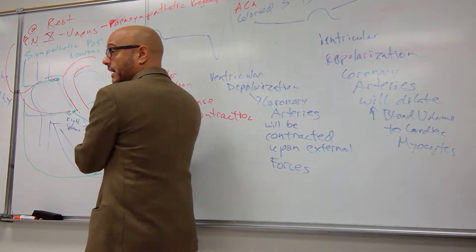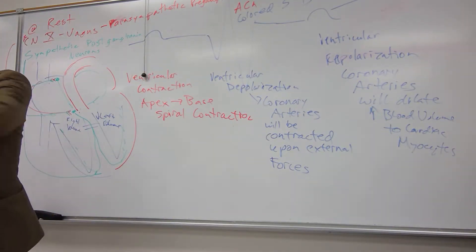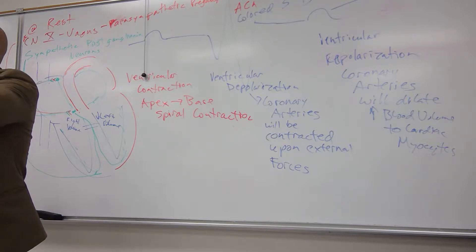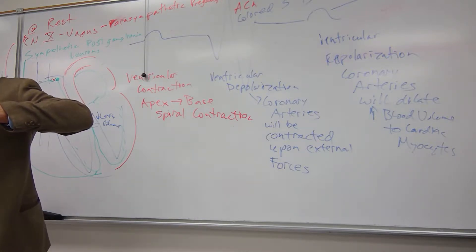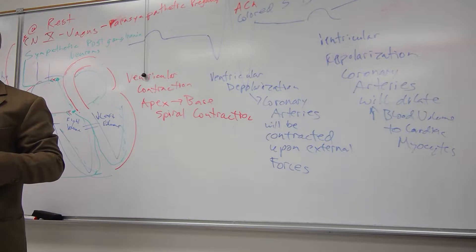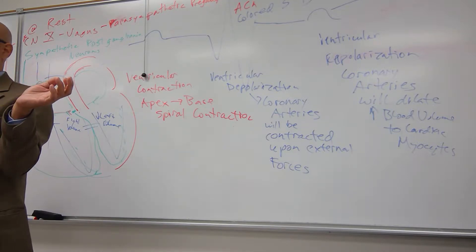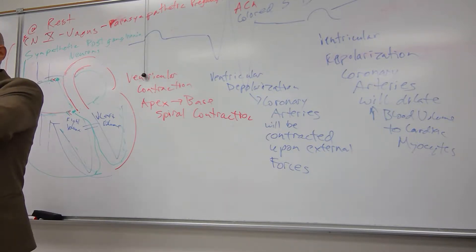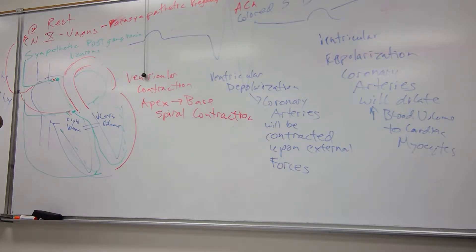Volume causes an accumulation of fluid, and even though the heart is increasing its thickness, the volume is so great that it starts to stretch the sarcomeres. When sarcomere length is stretched too far, there's no overlap between actin and myosin, no contraction — and that's called dilated cardiomyopathy. There's a limit to how far you can stretch those cardiac myocytes.